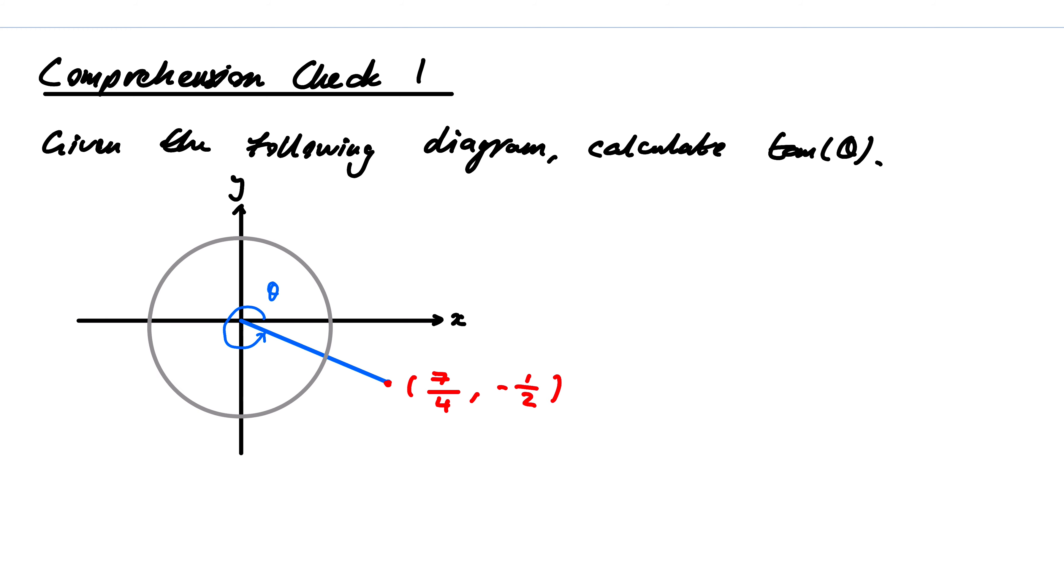If I have a unit circle centered at 0, radius 1, then when I'm talking about the sine or cosine of theta, that's just the x and y coordinates. Cosine is the x coordinate and sine is the y coordinate.